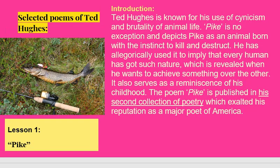Next poem: Pike. Ted Hughes is known for his use of cynicism and the brutality of animal life. Pike is no exception and depicts the pike as an animal born with the instinct to kill and destruct. Though it looks like a fish, it has features of a predatory animal. Hughes has allegorically used it to imply that every human has got such an instinct, which is revealed in how one wants to achieve something over others. The poem also begins as a reminiscence of his childhood. Pike is published in his second collection of poetry, which established his reputation as a major poet.